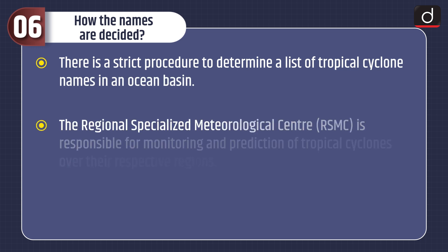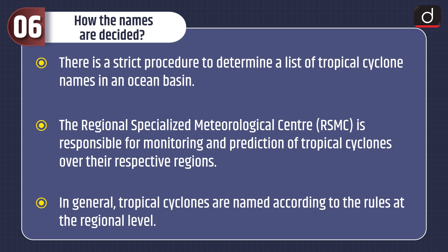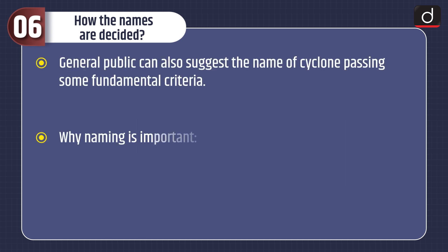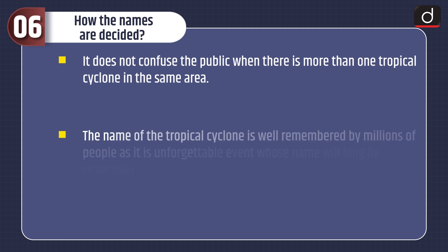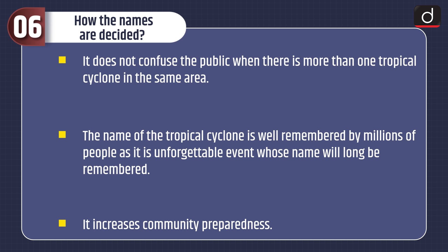Now let's understand how these names are decided. There is a strict procedure to determine a list of tropical cyclone names in an ocean basin. The Regional Specialized Meteorological Center, or RSMC, is responsible for monitoring and prediction of tropical cyclones over their respective regions. In general, tropical cyclones are named according to rules at the regional level. The general public can also suggest the name of a cyclone, provided some fundamental criteria are met. Naming is important because it helps identify each individual tropical cyclone, helps the public become fully aware of its development, keeps local and international media focused, does not confuse the public when there is more than one cyclone in the same area, and increases community preparedness.